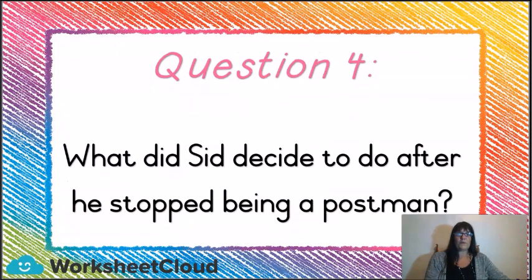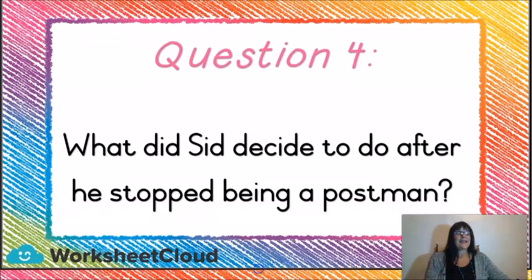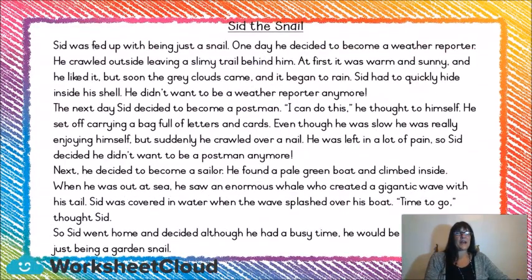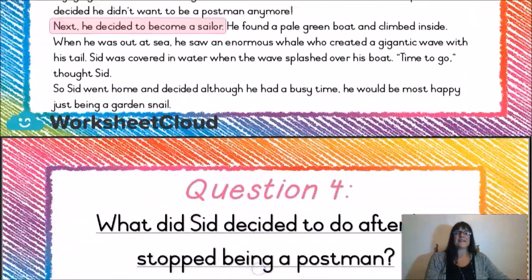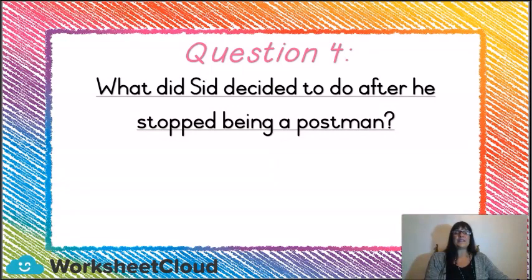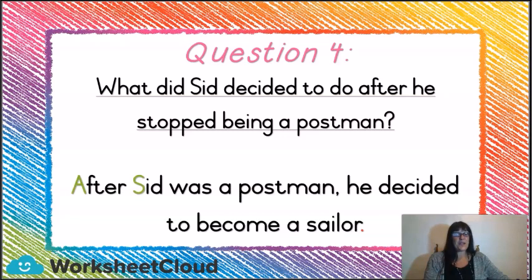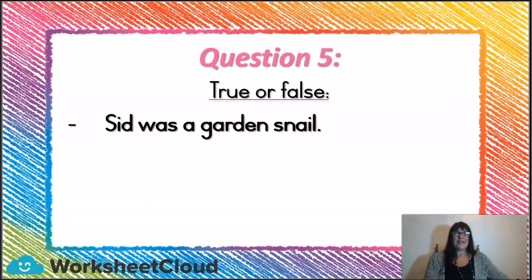Question 4: what did Sid decide to do after he stopped being a postman? Let's have a look in our text. Next, he decided to become a sailor. So the answer is: after Sid was a postman, he decided to become a sailor.